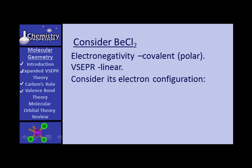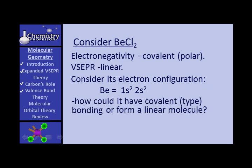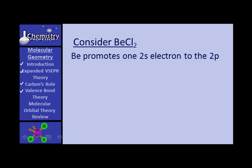Here's the electron configuration of beryllium. To form BeCl2, that doesn't look like a good prospect for covalent bonding — the S is full. But what if beryllium promotes one 2S electron to the 2P?